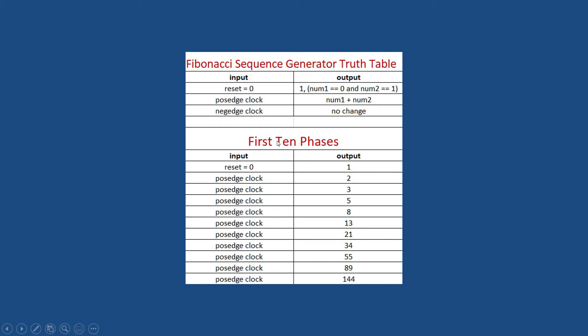And down here are the first 10 phases. So of course, if we go to reset equals zero, we'll have a one, just like it says up here. And if we let go of reset and at every posedge clock, we'll have a new value and we'll have the Fibonacci sequence. It'll be zero, one, one, two, three, all the way. This is the sequence. And I'll show you that in Logisim right here, right now.